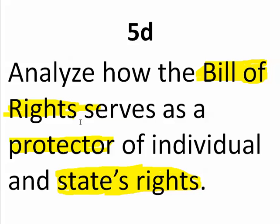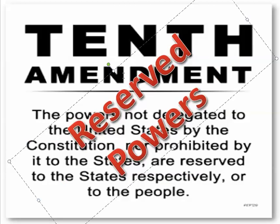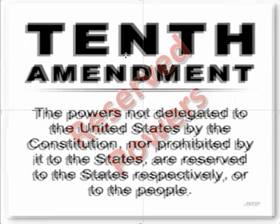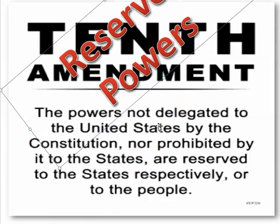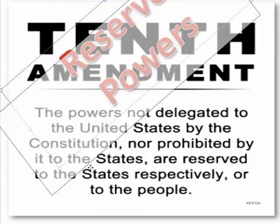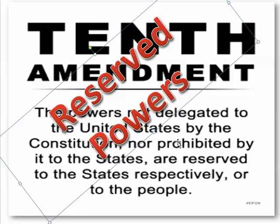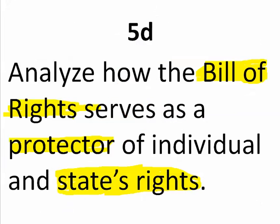The Tenth Amendment — the reserved powers amendment — is how the Bill of Rights protects states' rights. It says the powers not delegated to the United States by the Constitution, or prohibited by it to the states, are reserved to the states respectively, or the people. All powers not given to the national government are reserved to the states and the people. That's how the Bill of Rights protects states' rights and individual rights.